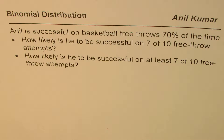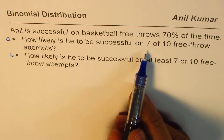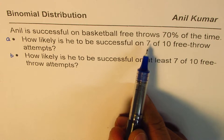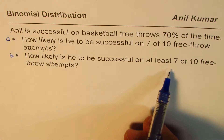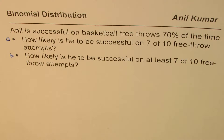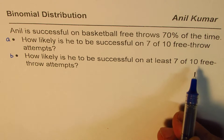Part B is how likely is he to be successful on at least 7 of 10 free throw attempts? So we have two parts. Part A, we want to find the success rate on 7 of 10 throws. The second one is at least 7, so that means we are looking for a success rate of 7, 8, 9, or 10.